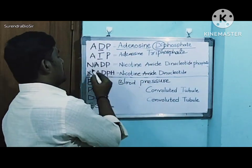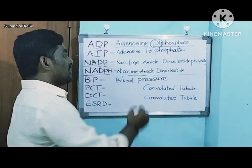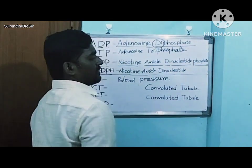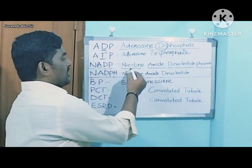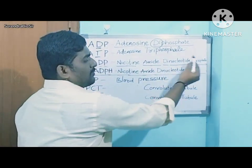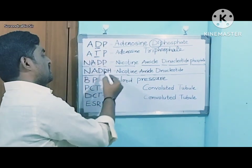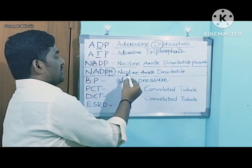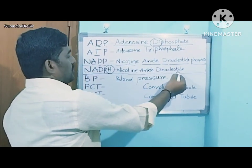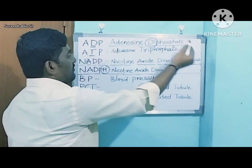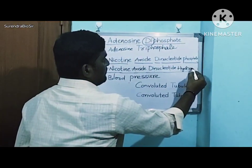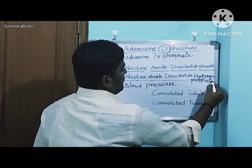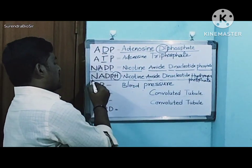Next one is NADP — Nicotinamide Dinucleotide Phosphate. Similarly, NADPH — Nicotinamide Dinucleotide Hydrogen Phosphate. Up to here, that is the first chapter.